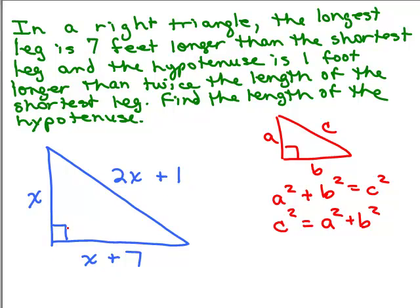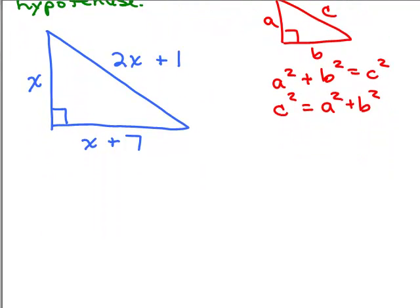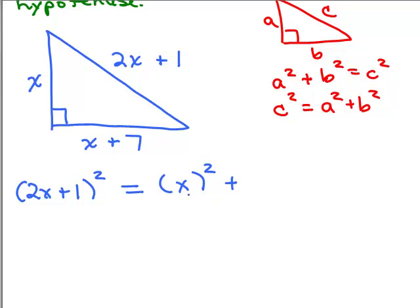Let's apply that to this problem. The hypotenuse is 2x plus 1, so we've got 2x plus 1 squared on the left. That equals the sum of each leg squared — the shortest leg is x, so we square that to get x squared, and the other leg is x plus 7, so we also square that. So the Pythagorean theorem gives us: hypotenuse squared equals one leg squared plus the other leg squared.